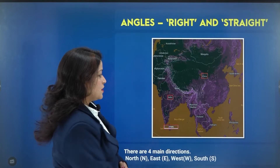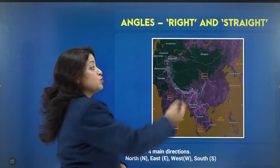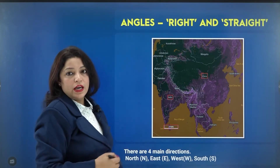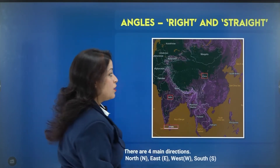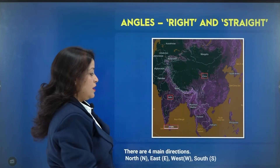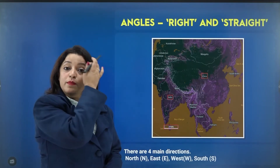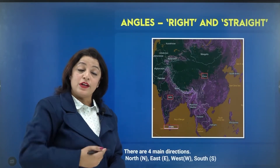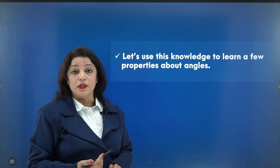Let us check the world map. India lies to the south of China — or is it to the south-west? We can say Thailand lies to the south of Myanmar, Thailand lies to the south of China, Vietnam lies to the south of China, and Sri Lanka lies to the south of India. These are conclusions we can draw based on directions. Now, let us use the knowledge of directions to learn more about angles.